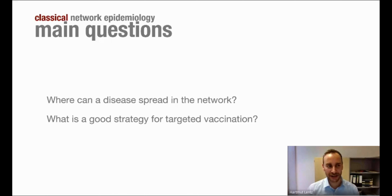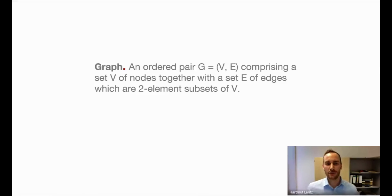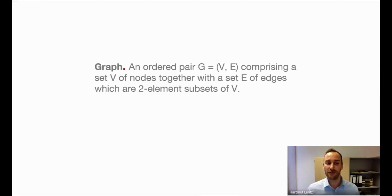The second central question in classical network epidemiology is: what is a good strategy for targeted vaccination — where would you place sentinel nodes strategically so that you have least costs and get most out of it? To use these tools, you need a mathematical definition. A network is a graph: an ordered pair G comprising a set of nodes V and a set of edges E, where each edge is simply a two-element subset of V — a pair of nodes.